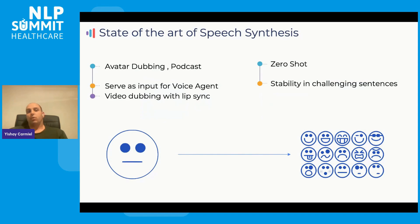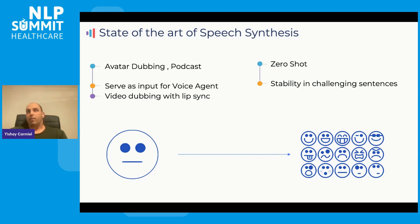The state of the art in speech synthesis systems is very good. They excel at avatar dubbing, podcast narrating, serving as input for very realistic-sounding voice agents, and video dubbing with lip syncing. What remains challenging is providing very high quality zero-shot output from a very short sample of the target speaker. Also, generating very long speech — in the range of a few minutes or hours — can sometimes cause the system to hallucinate. These are the major challenges in state-of-the-art speech synthesis.